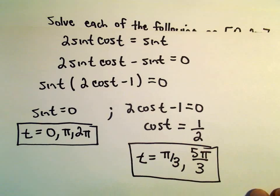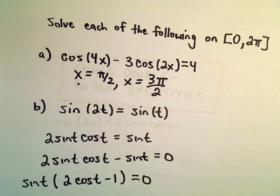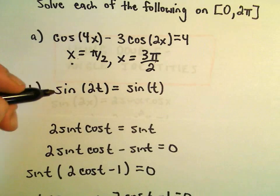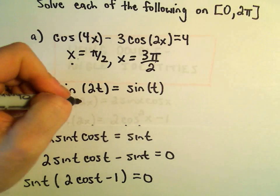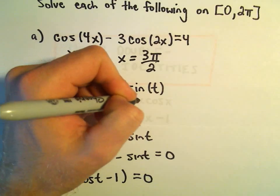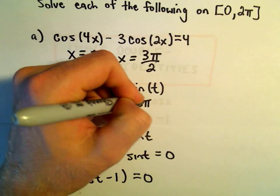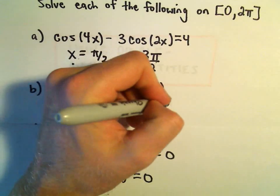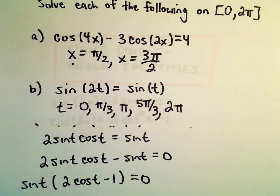So in this case, we've got 5 solutions to our original equation. Sine of 2t equals sine of t. We've got 0, pi over 3, pi, 5 pi over 3, and our last solution we found was 2 pi.